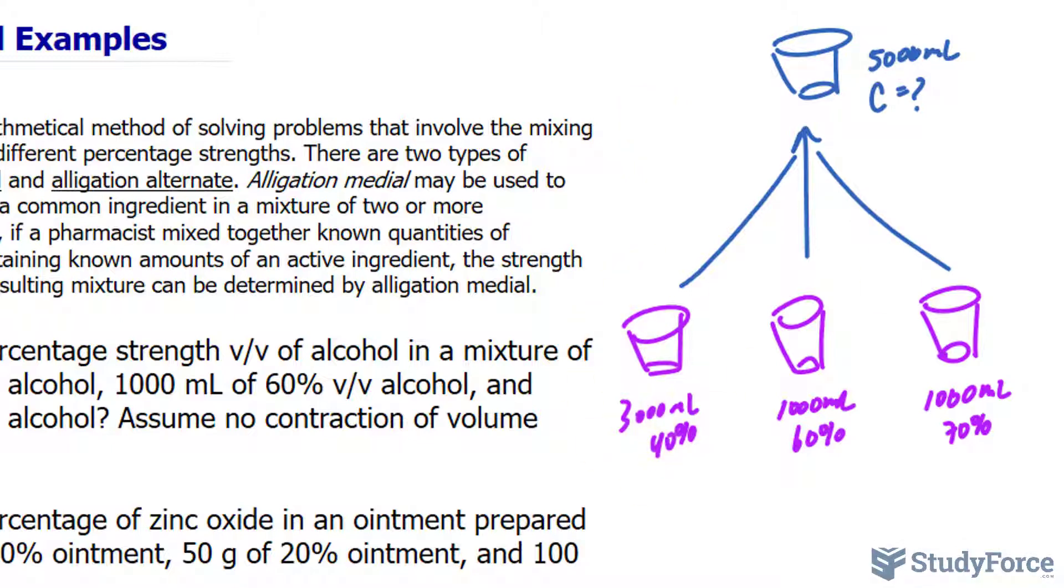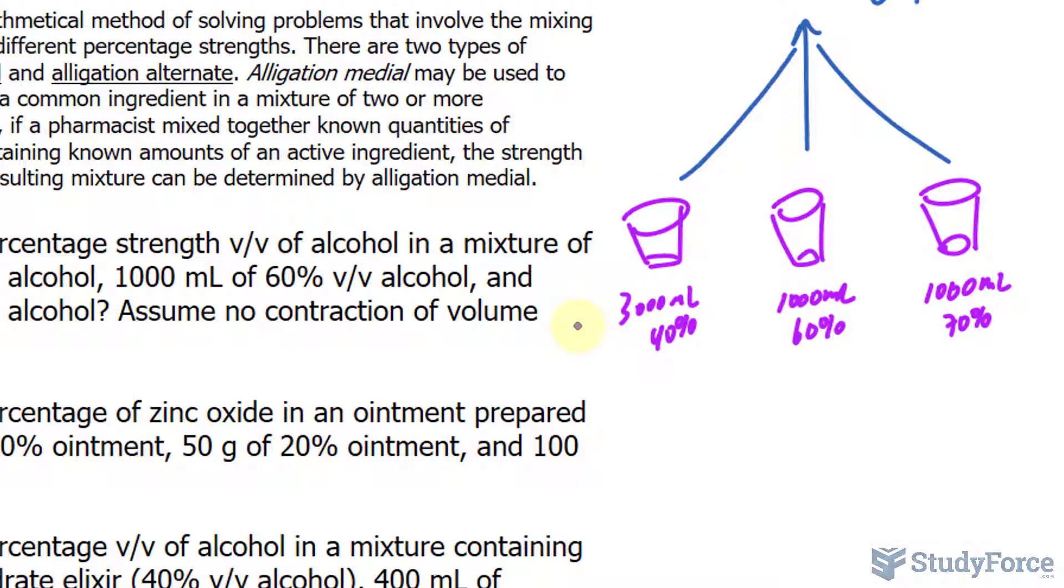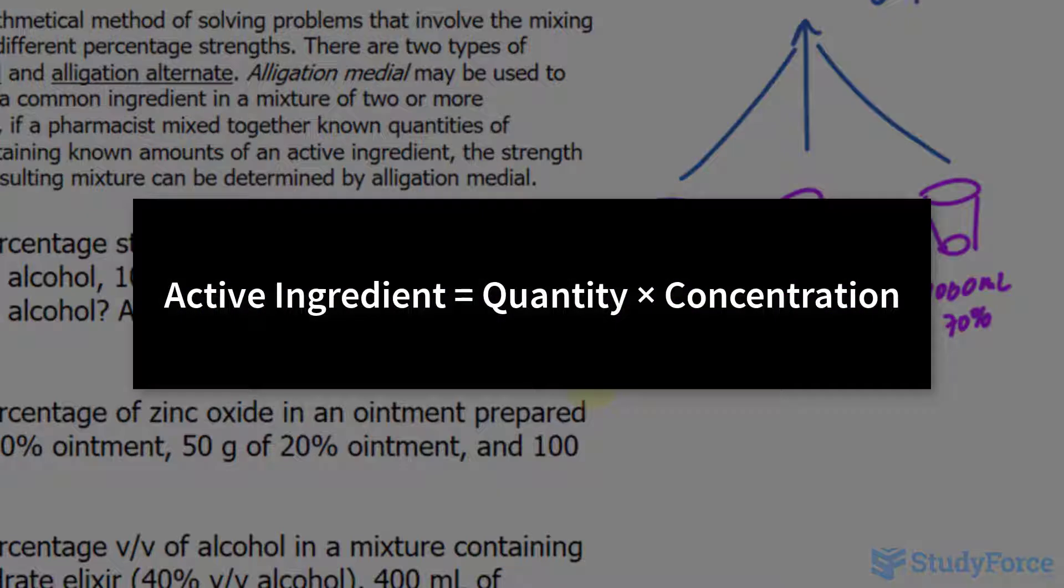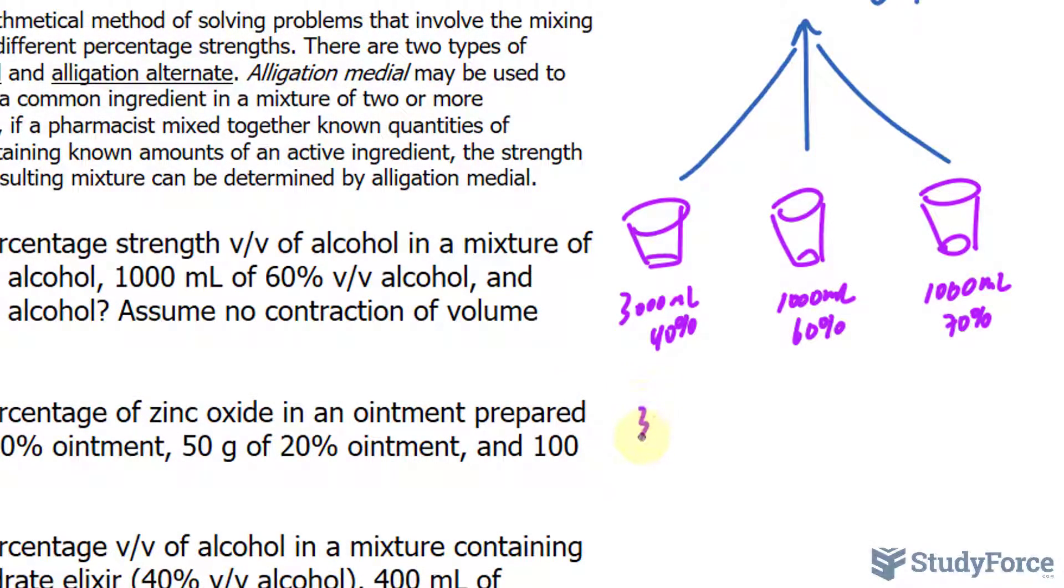If I wanted to find the amount of active ingredient or the amount of alcohol in this particular container, I would take the quantity and multiply it by the percentage. So I'll take 3000 milliliters and multiply that by the concentration being 40% made into a decimal, 0.4. Now this 40% isn't a unitless value.